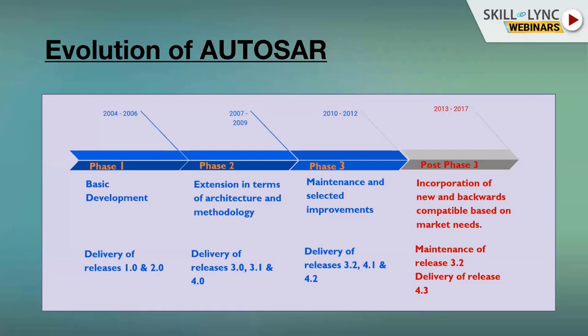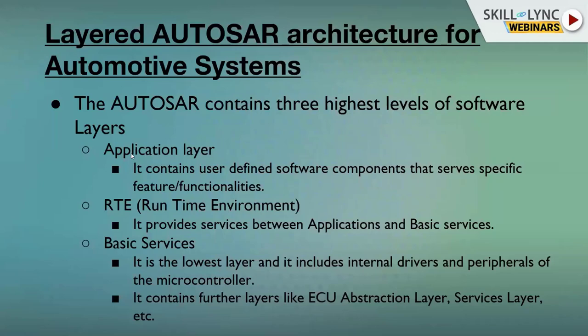Regarding the evolution of AUTOSAR: it originated around 2004 to 2006, and the architecture has kept increasing in complexity since then. Currently we are at version 4.3. Before AUTOSAR, very simple architectures were used for ECUs, which were vulnerable and not able to handle complex or new features. So to handle more complex features, the industry switched to AUTOSAR.